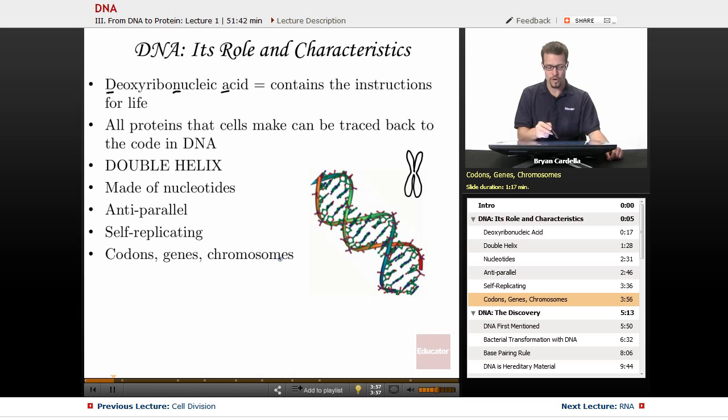Codons, genes, and chromosomes, these terms have to do with what DNA is made up of. And I'll give you an analogy. A codon is a set of three bases, three nucleotides side by side. And you find these in DNA and RNA. This is like a word in the genetic sentence.